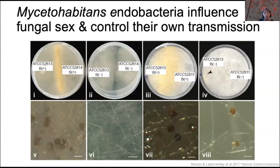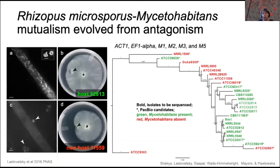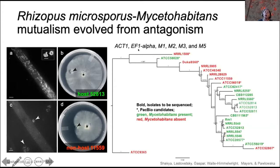Seeing these patterns, we became interested in the evolution of this particular symbiosis and reconstructed the genealogy of rhizopus microsporus. We realized that this association evolved from an antagonistic interaction. The basal isolates on this genealogy are non-hosts, marked in red in the phylogeny, and these non-hosts interact antagonistically when faced with bacteria.